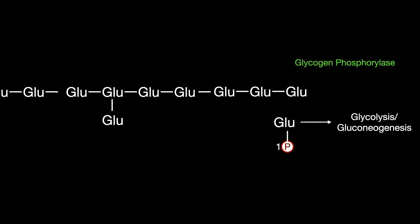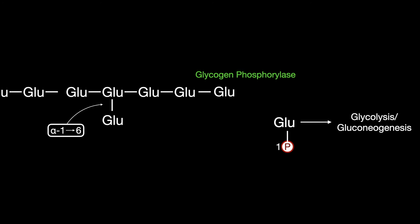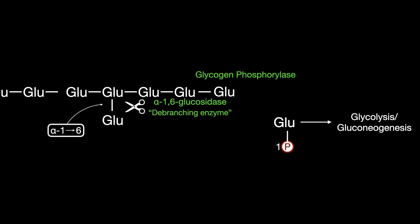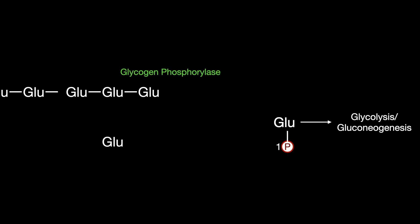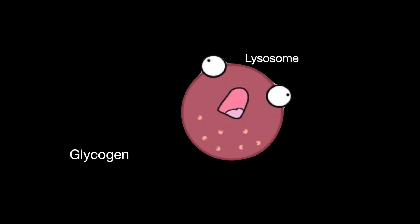Glycogen phosphorylase can continue to catabolize the chain. The lone glucose attached by an alpha-1,6 bond is removed by another debranching enzyme called alpha-1,6-glucosidase. This process is repeated as needed, or until the glycogen has been fully metabolized. A small amount of glycogen can also be broken down by alpha-1,4-glucosidase, an enzyme in the lysosome that turns it directly into glucose.